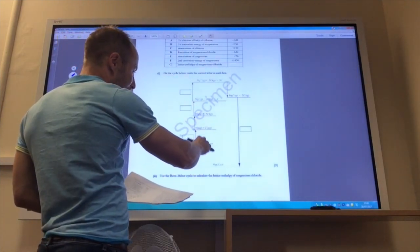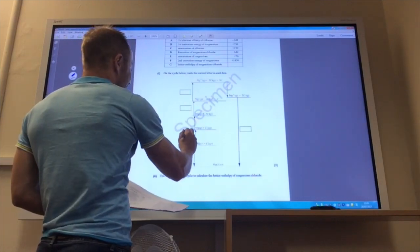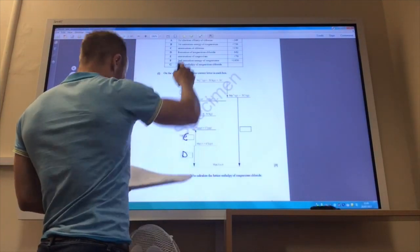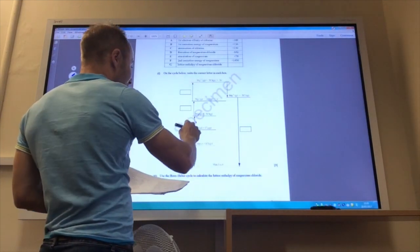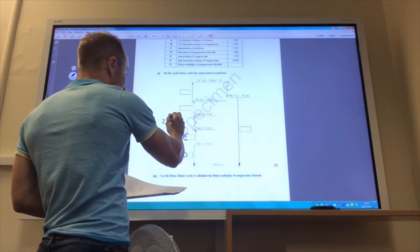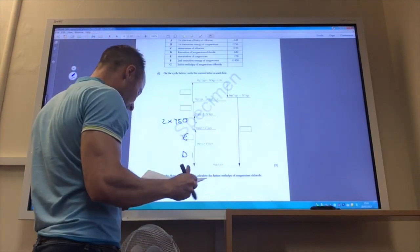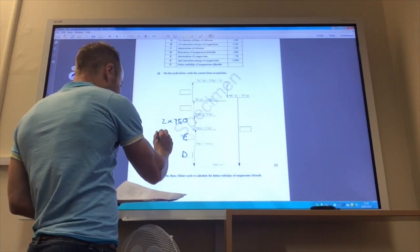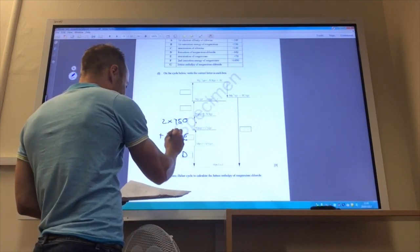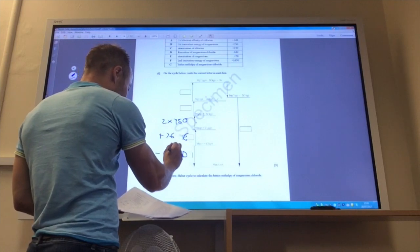This one here is magnesium solid becoming magnesium gas, so that is atomisation of magnesium, which is E. This one, this one, this one that is going to actually be the atomisation of chlorine, so that is going to be 2 times 150. Let's just put the numbers on as well, because it will help us later. That's going to be plus 736. This will be minus 642.